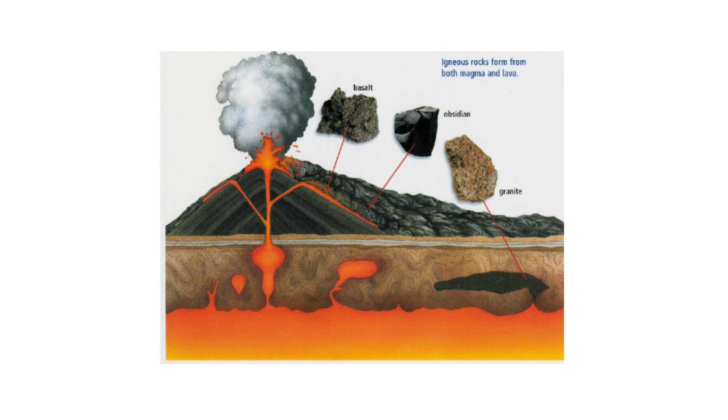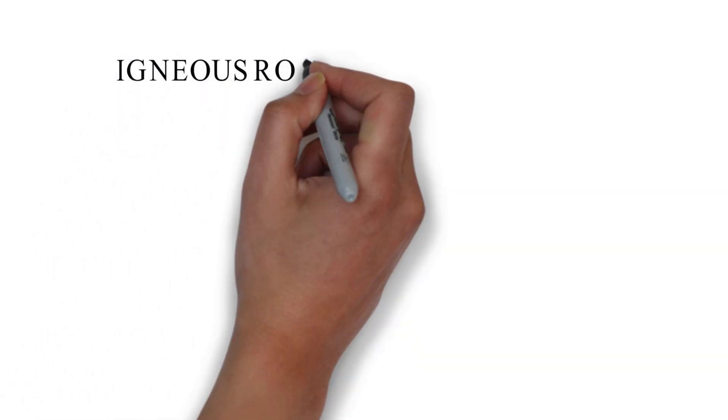In this image we can see a few examples of igneous rock. Basalt is formed when the magma solidifies at the surface of the earth, as well as obsidian, while granite is the igneous rock which is formed due to the cooling and solidification of magma beneath the earth crust.